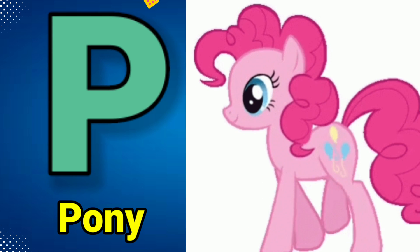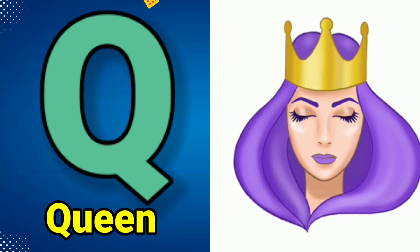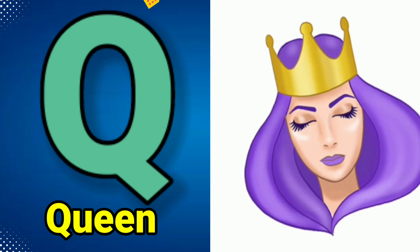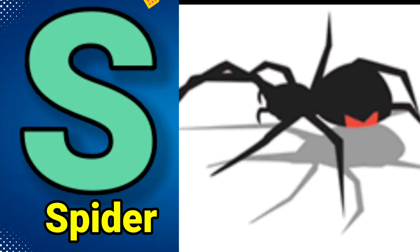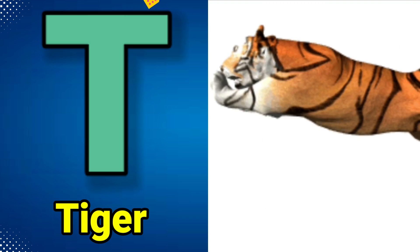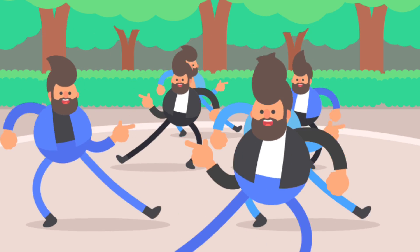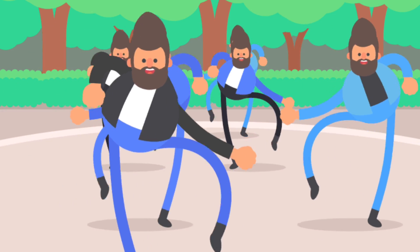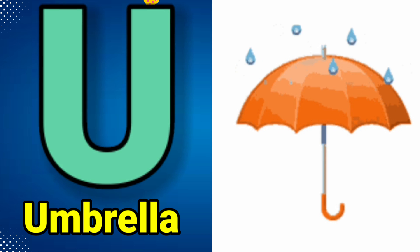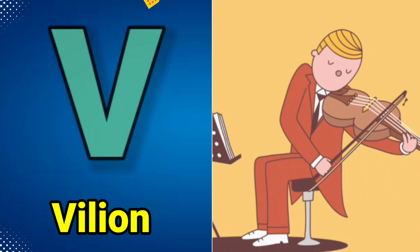P is for Pony, P-P-Pony, P-Pony. Q is for Queen, Q-Q-Queen, Q-Queen. R is for Rainbow, R-R-Rainbow, R-Rainbow. S is for Spider, S-Spider. T is for Tiger, T-T-Tiger, T-Tiger.